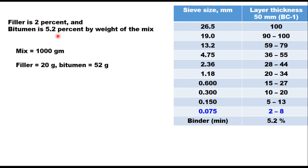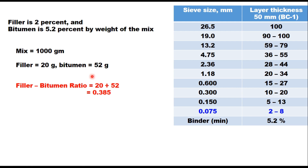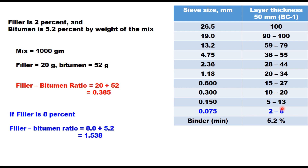In a mixture of 1000 grams, the ratio is 20 grams upon 52 grams. You can directly take the ratio of 2 upon 5.2, so the filler-bitumen ratio will be 0.385. If you take the other extreme of filler content at 8 percent, the filler-bitumen ratio will be 1.538. So it can vary from 0.38 to 1.538.